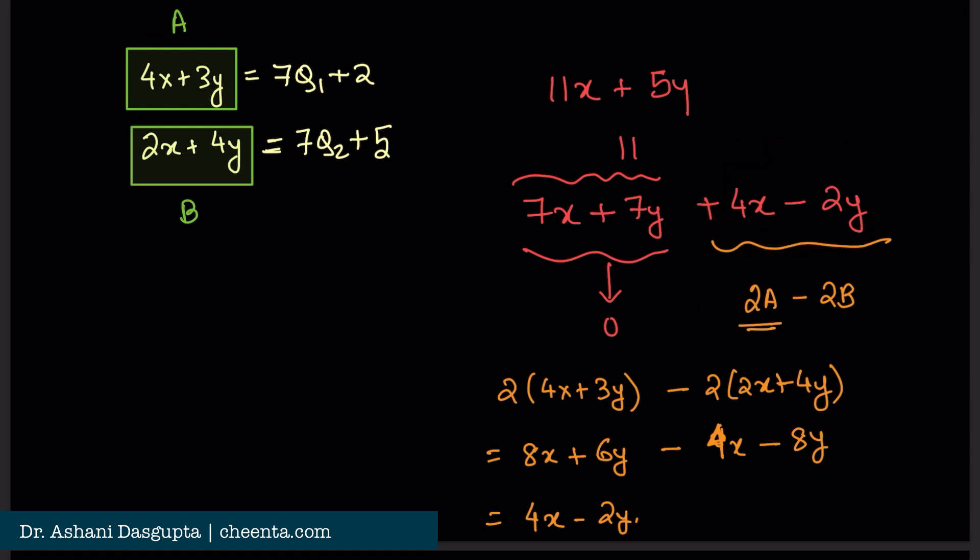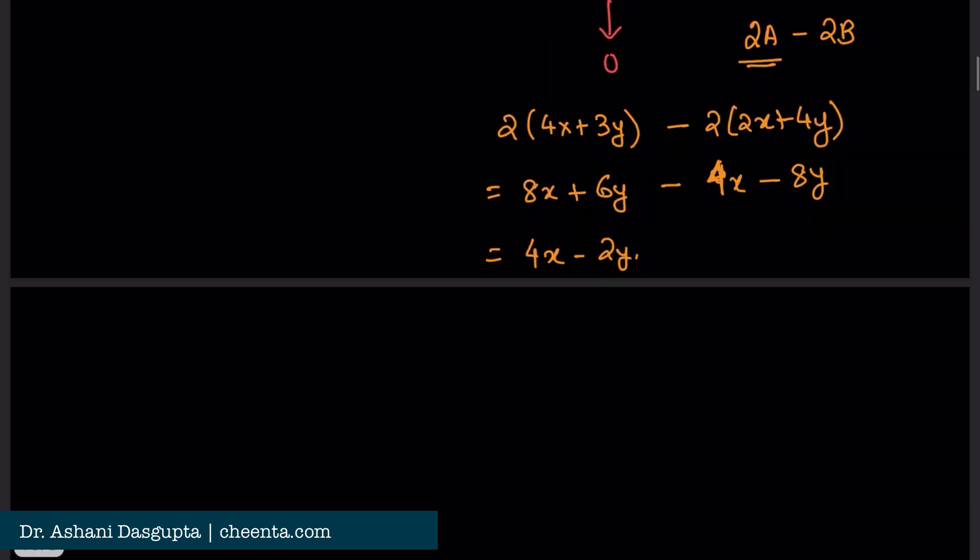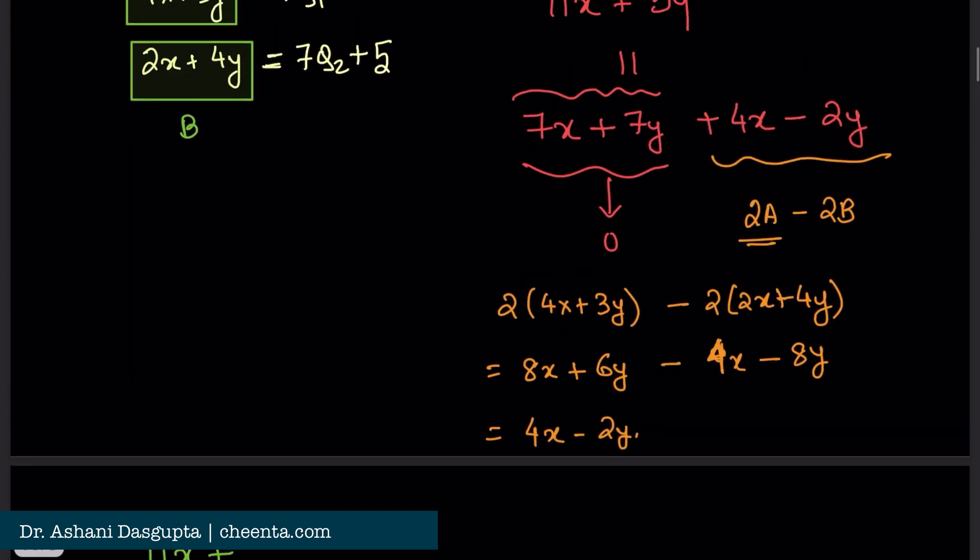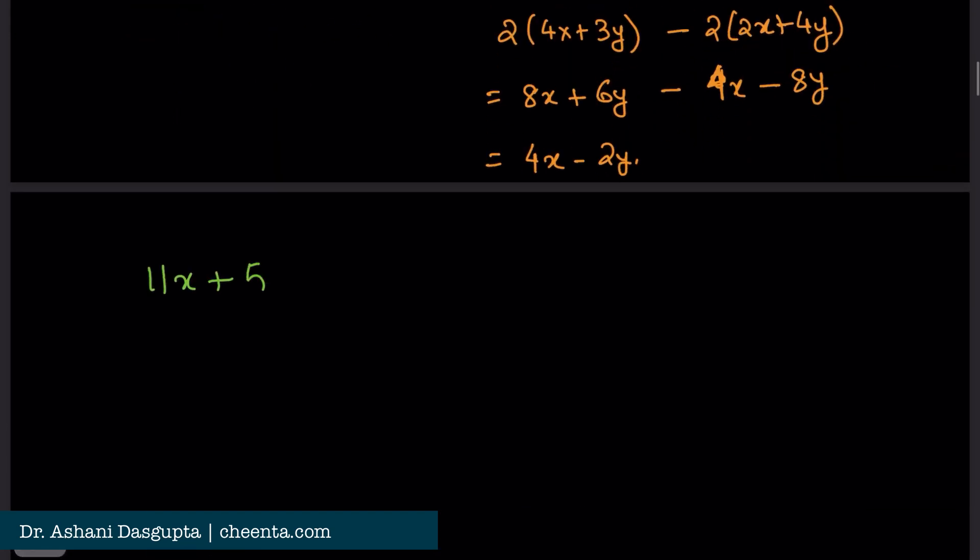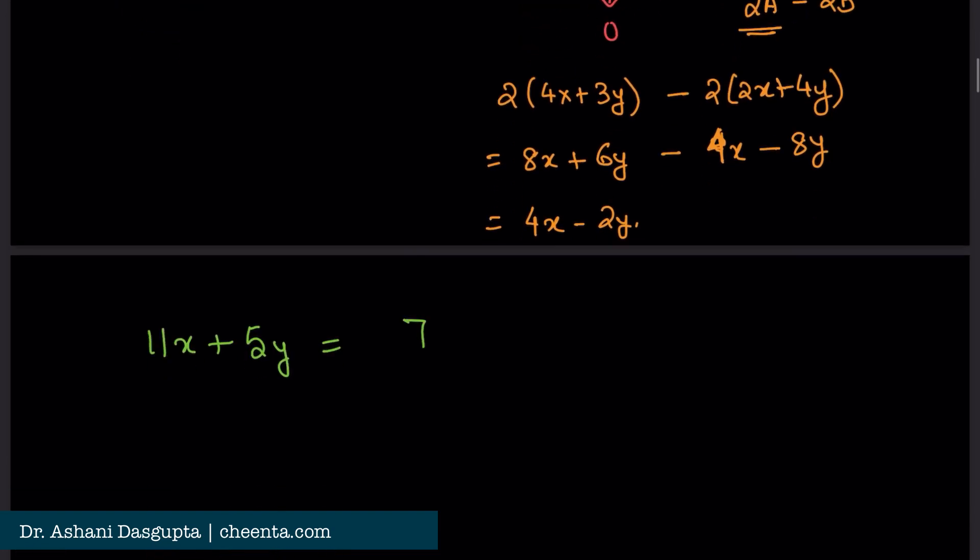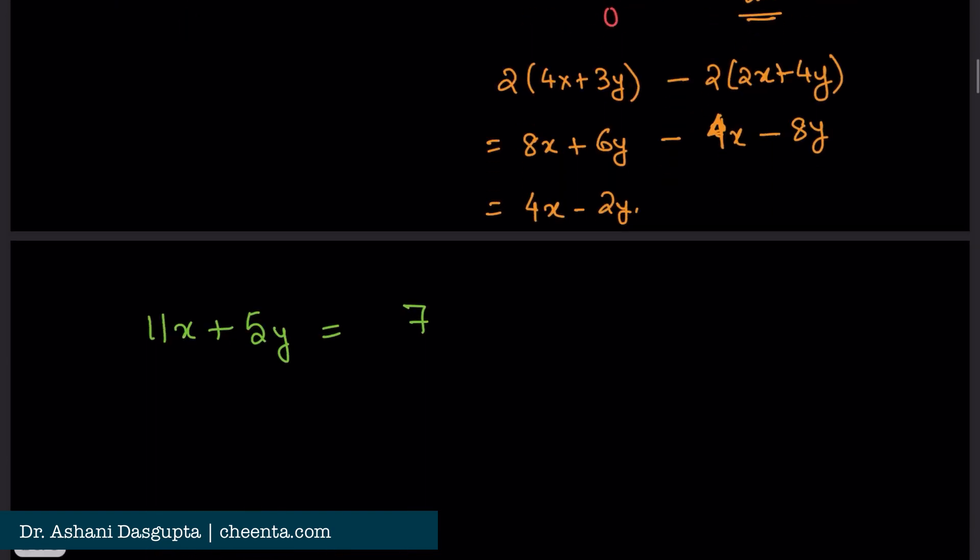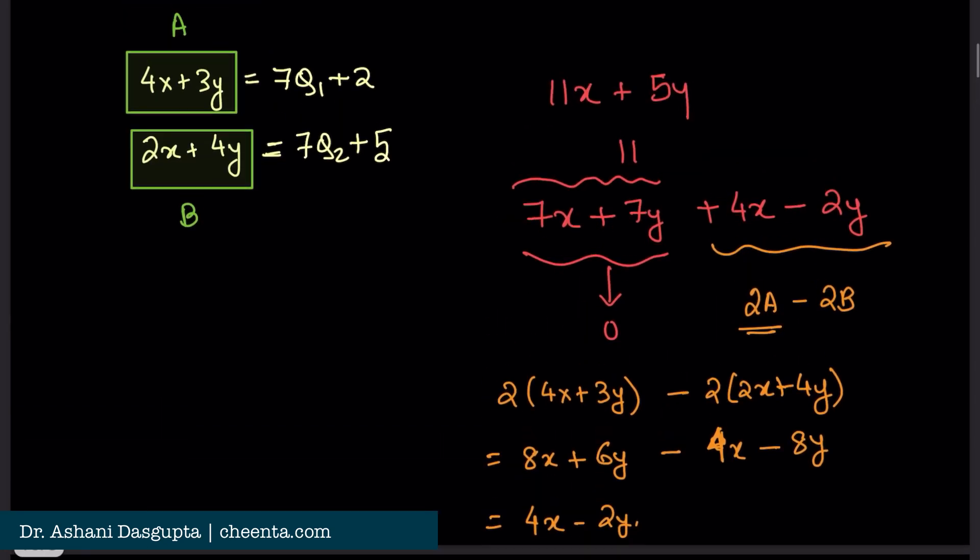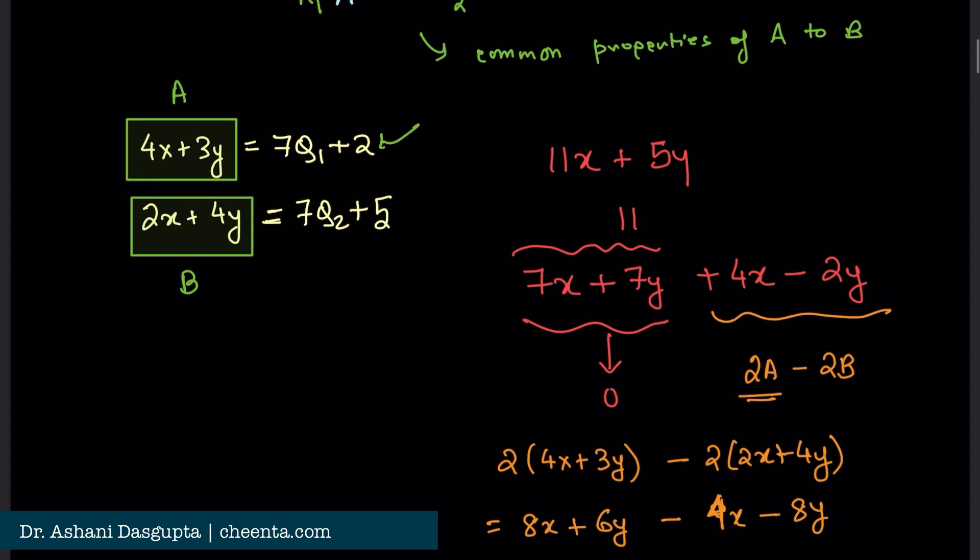Now we are almost done with the problem. Let me just write it down. 11x plus 5y is equal to 7 times x plus y plus 2 times a minus 2 times b. I will write this right hand side expression now to finish the problem.